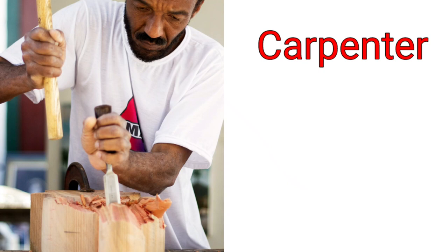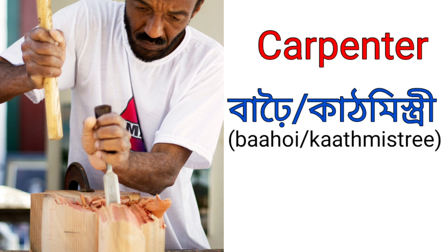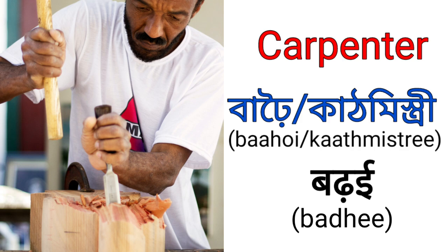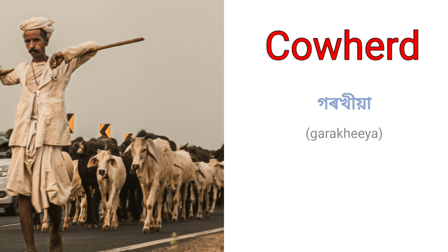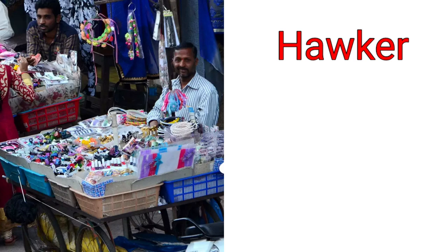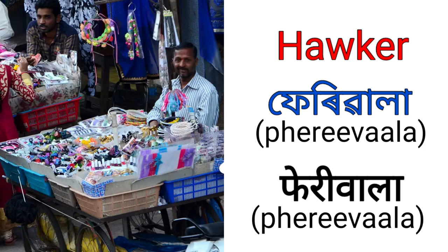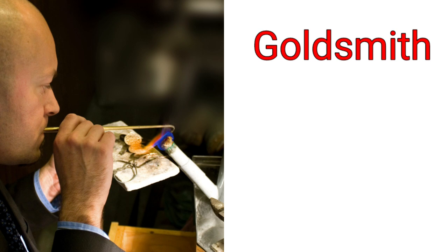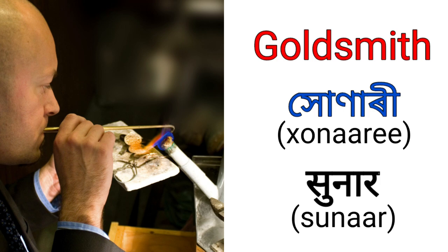Carpenter is called Barhoi or Kathmisti in Assamese and Barhoi in Hindi. Cowherd is called Gorokya in Assamese and Gwala in Hindi. Hawker is called Feriwala in Assamese and Feriwala in Hindi.